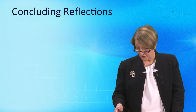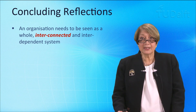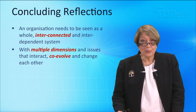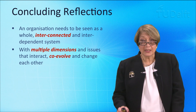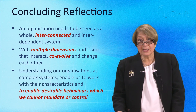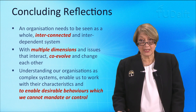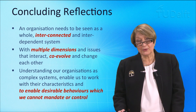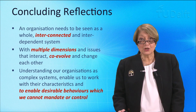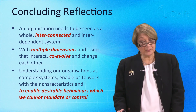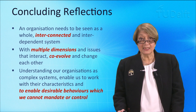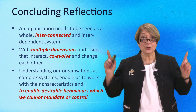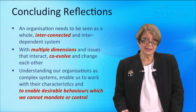Some concluding reflections. An organisation needs to be seen as a whole, interconnected and interdependent system with multiple dimensions and issues that interact, co-evolve, and change each other. Understanding our organisations as complex systems enables us to work with their characteristics and to enable desirable behaviours which we cannot mandate or control. This brings us full circle from our earlier discussion in week two: complex systems cannot be designed or controlled and their behaviour cannot be predicted. This video showed us how we can, in a different sense, manage complex systems — a completely different approach by understanding the problem space and co-creating the enabling environment. Thank you, ladies and gentlemen.